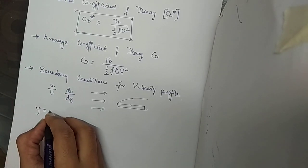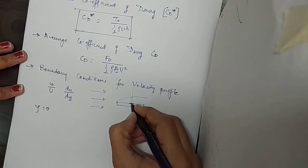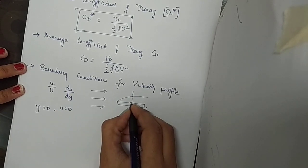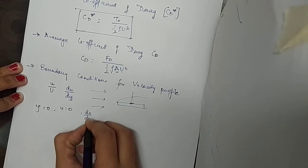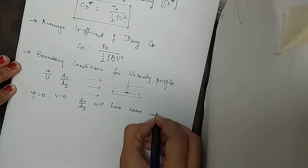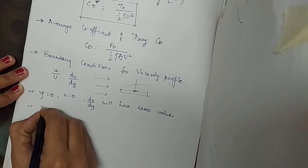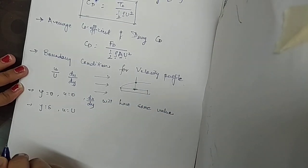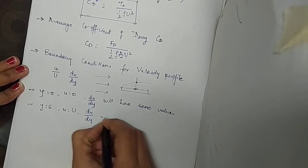At y equals to 0, that is at the plate surface, y will be 0. We are measuring y in the normal direction. At y = 0, u is also 0 because at this point the plate is stationary, so the velocity of the fluid is also stationary. The velocity gradient du/dy will have some definite finite value. Then for y equals to δ, at this point the velocity will be equal to the free stream velocity, so small u equals capital U, and the velocity gradient du/dy will be 0.